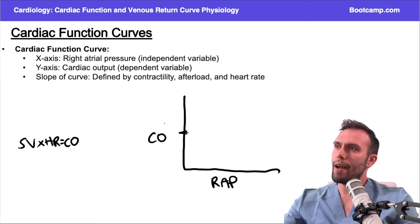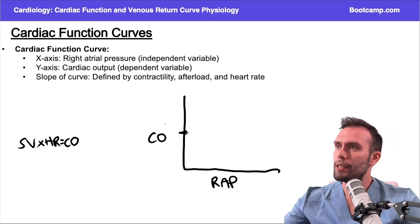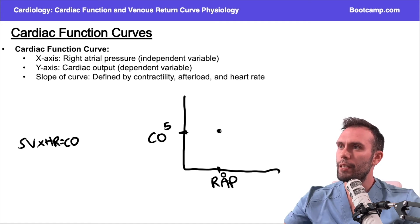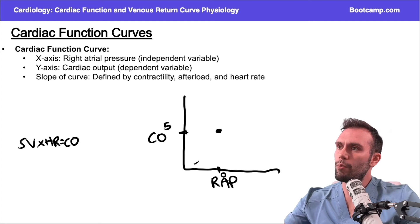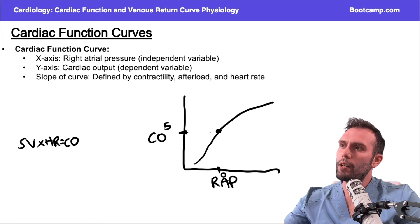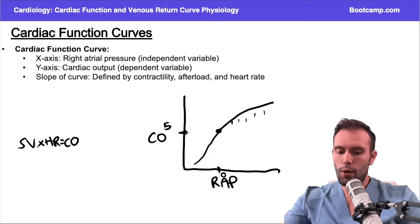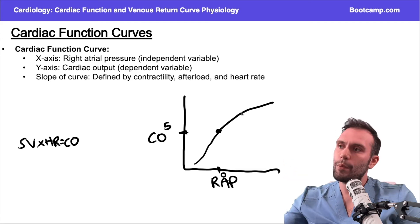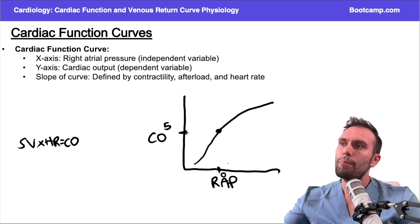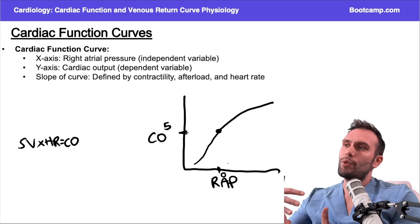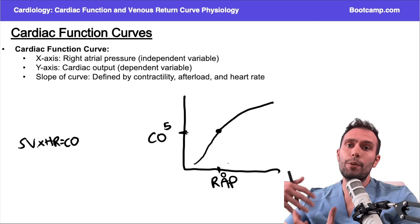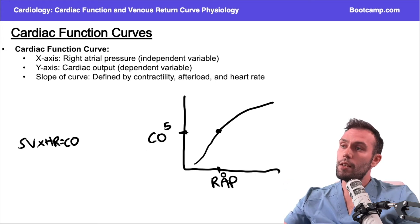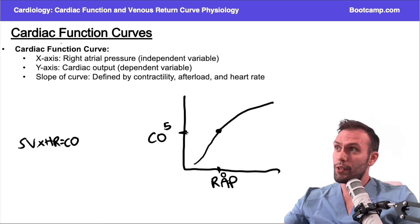The average normal cardiac output is about 5 liters per minute, and right atrial pressure is typically close to zero. So I'll plot a point right here between these two. If I plot right atrial pressure for a given cardiac output, as the right atrial pressure goes up, the cardiac output is also going to go up. That makes sense because this goes back to preload — the same Frank-Starling mechanism. More blood coming back to the heart increases myofiber stretch and sarcomere length, increasing contractility and force of contraction, giving more stroke volume and subsequently increasing cardiac output.